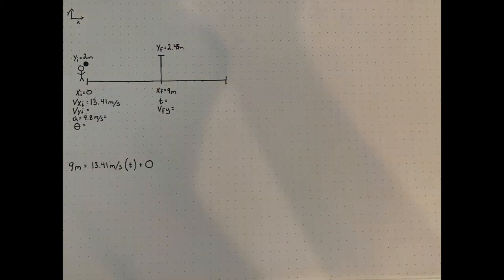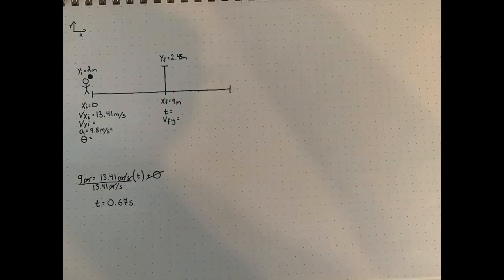At 9 meters and an initial velocity of 13.41 meters per second multiplied by time plus our initial starting point of zero, the time it takes the ball to go 9 meters is time equals 0.67 seconds.